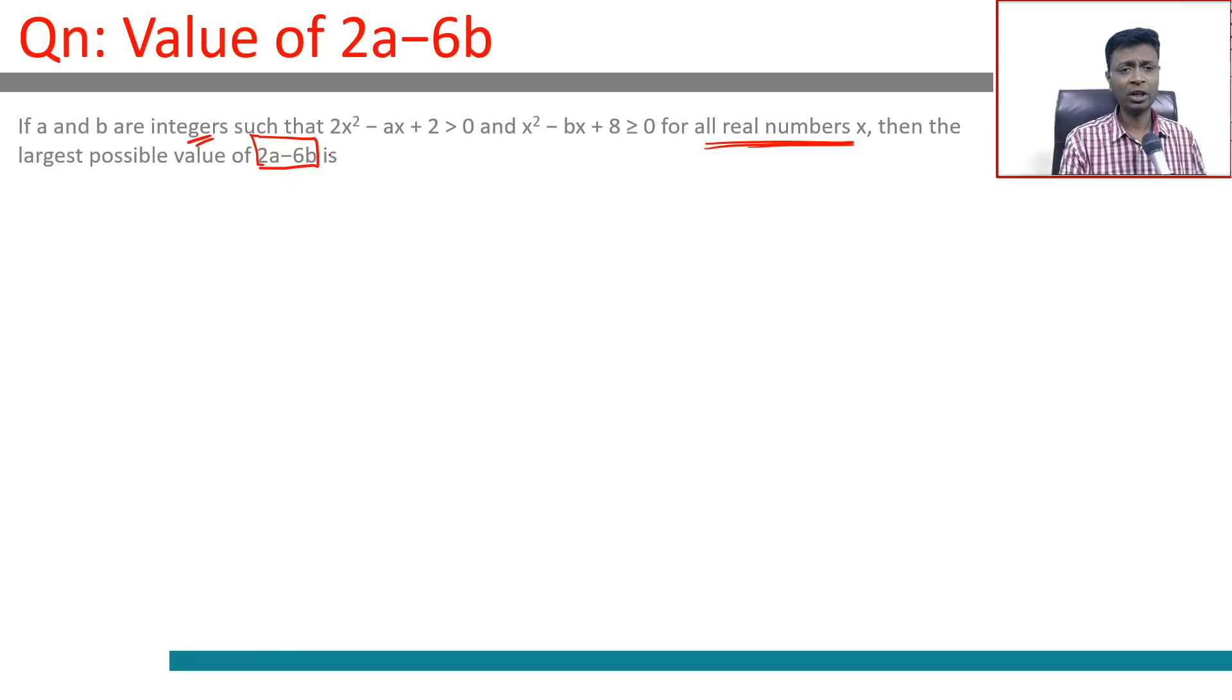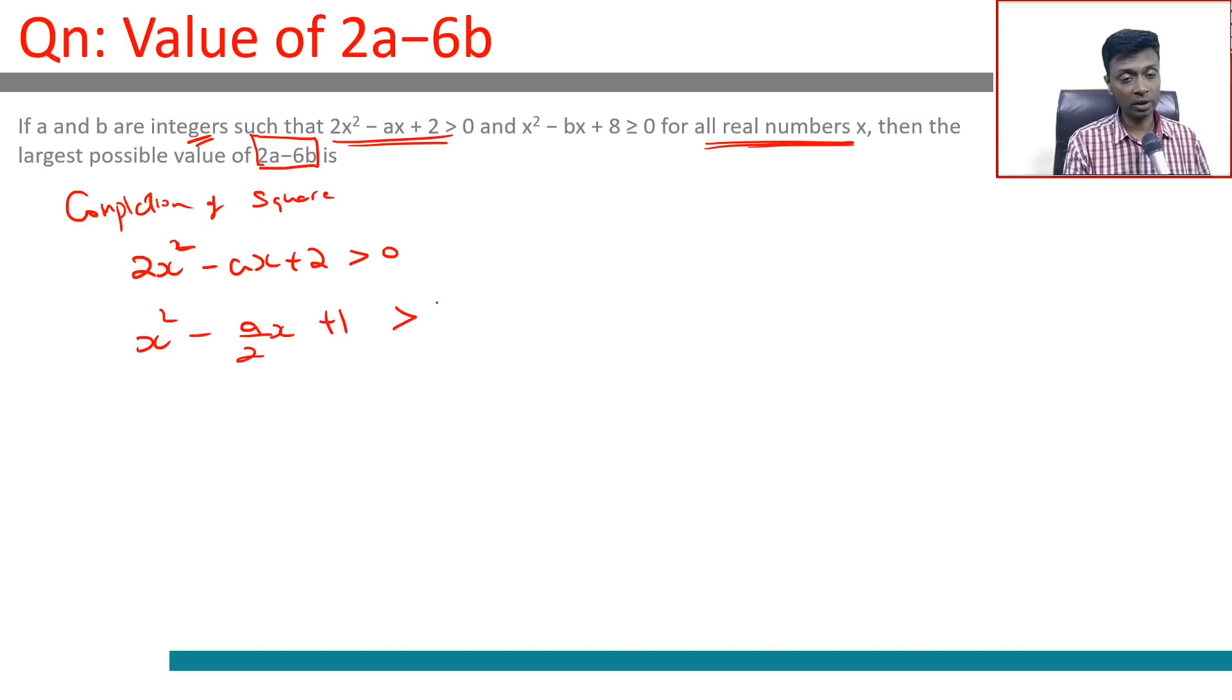It's a complicated sounding question. I'm going to do this by a wonderful method called completion of squares. What do I mean by that? Let's take this one: 2x² - ax + 2 > 0. You don't want to deal with 2x². I'm going to think of this as x² - (a/2)x + 1 > 0.